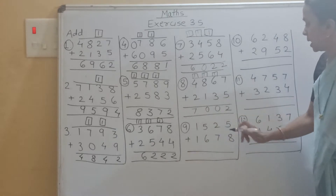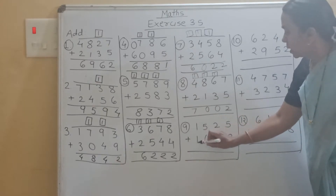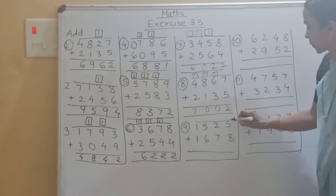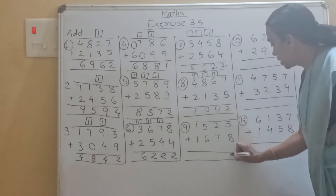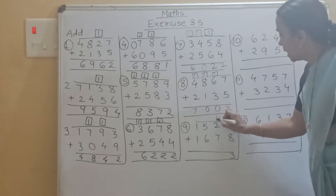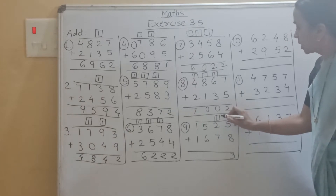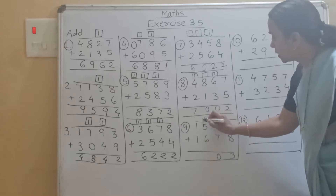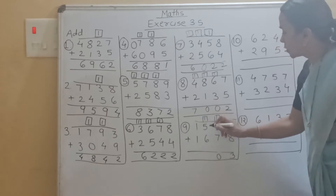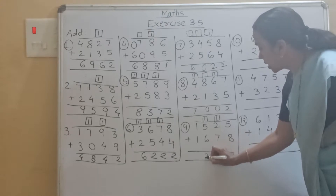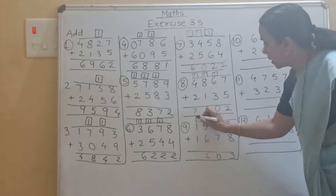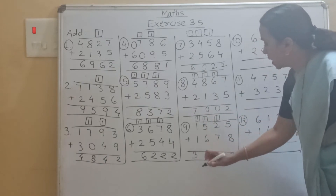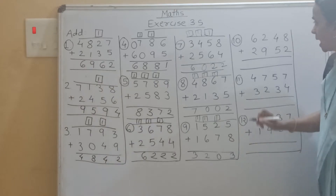Now the ninth example is 1525 plus 1678. So 8 plus 5 is 13, carry 1. Then 2 plus 1 is 3, 3 plus 7 is 10, carry 1. Then 5 plus 1 is 6, 6 plus 6 is 12, carry 1. Write down 2, carry 1. Then 1 plus 1 is 2, 2 plus 1 is 3. Our answer is 3203.